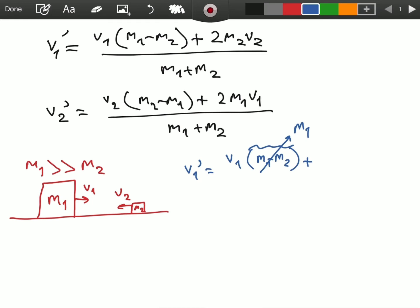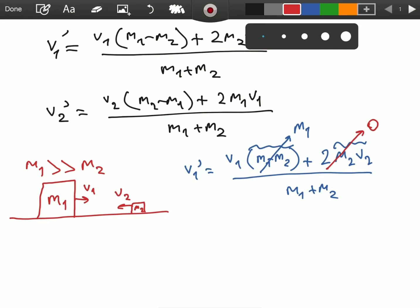Plus, we have 2m2v2 divided by m1 plus m2. Well, here again, we have m2 here. Since m2 is a tiny mass, it is close to 0, which means we can neglect this 2m2v2 term. So, this goes to 0 as well. And on the denominator, we have m1 plus m2. This is approximately equal to m1. So, we can neglect m2 here as well.